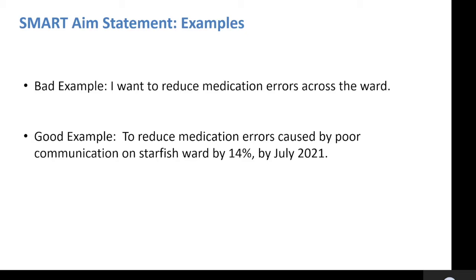This is specific because it actually mentions the ward. It's measurable because we could use data and we can define what a medication error is within our measurement plan. It's achievable as this percentage improvement has been agreed by staff on the ward. It's relevant because ward staff agree this is an issue, it improves patient outcomes, and links to our organisation's strategic aim of improving patient safety. And it's time-bound as it includes July 2021.